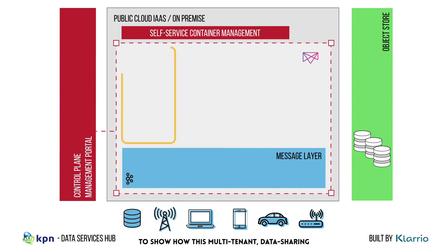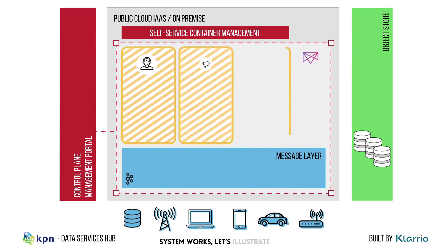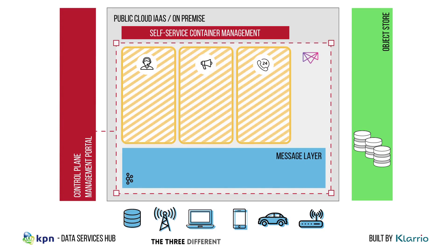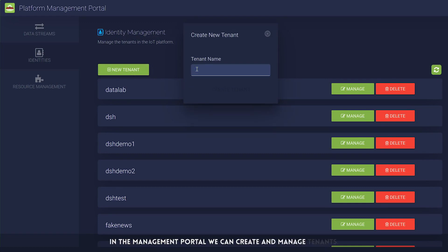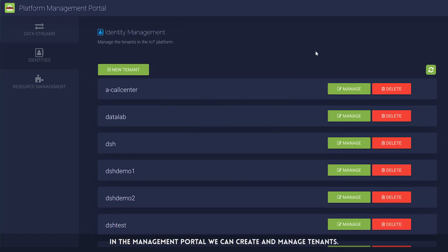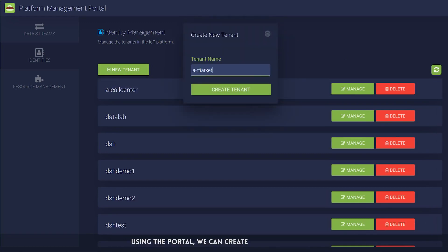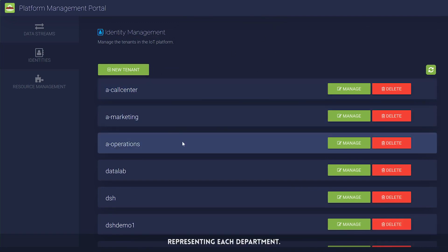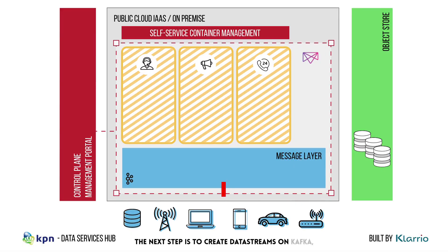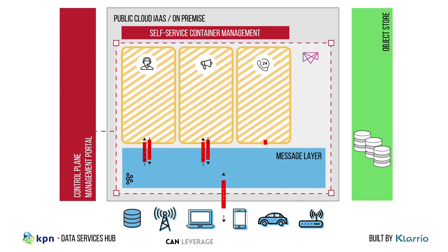To show how this multi-tenant data sharing system works, let's illustrate how the three different tenants are created using the tools provided by the DSH. In the management portal, we can create and manage tenants. Using the portal, we can create the three tenants representing each department. The next step is to create data streams on Kafka and set the appropriate read-write privileges so that the respective tenants can access these data streams.